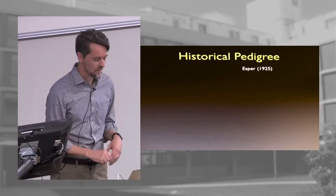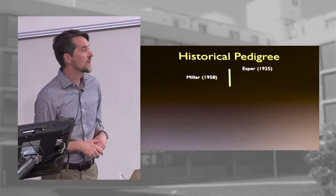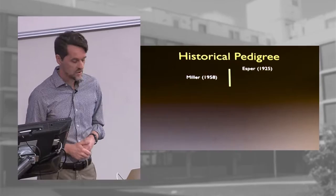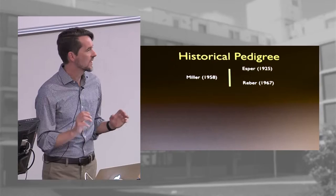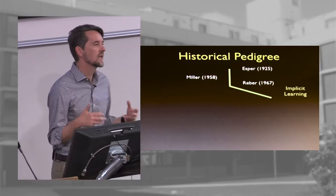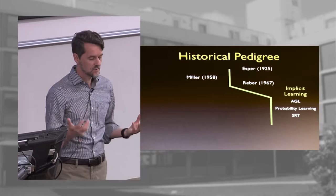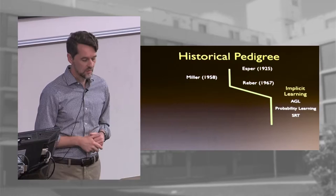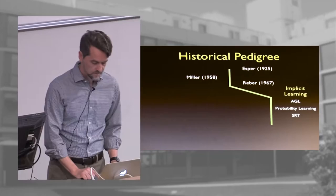Statistical learning has a rather long pedigree, going back nearly 100 years. Starting with Asper, a little later in the 1950s we had George Miller and his project Grammarama, looking at artificial languages to get insight into language acquisition and processing. And then later we have the seminal work by Arthur Reber on artificial grammar learning. Then the literature kind of split into two separate literatures — hence the title of my talk.